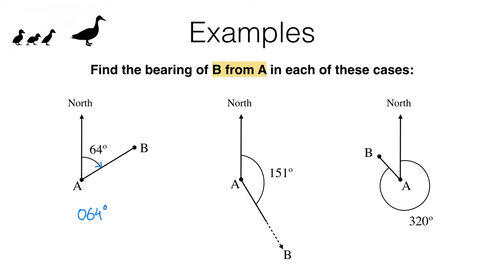In the next example we again want the bearing of B from A. Starting at A and facing north, we would need to turn 151 degrees clockwise in order to face towards B. So the bearing is 151 degrees. This is already a three-digit number, so we don't need to put any leading zeros in front of it.